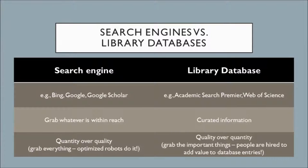I also want to briefly remind you of the difference between a search engine and a library database. A search engine, something like Bing or Google Scholar, is more interested in grabbing everything that's within reach. Quantity is valued over quality. As such, you only get information about a resource that that resource provides about itself, so nothing deeper than maybe scratching the surface.